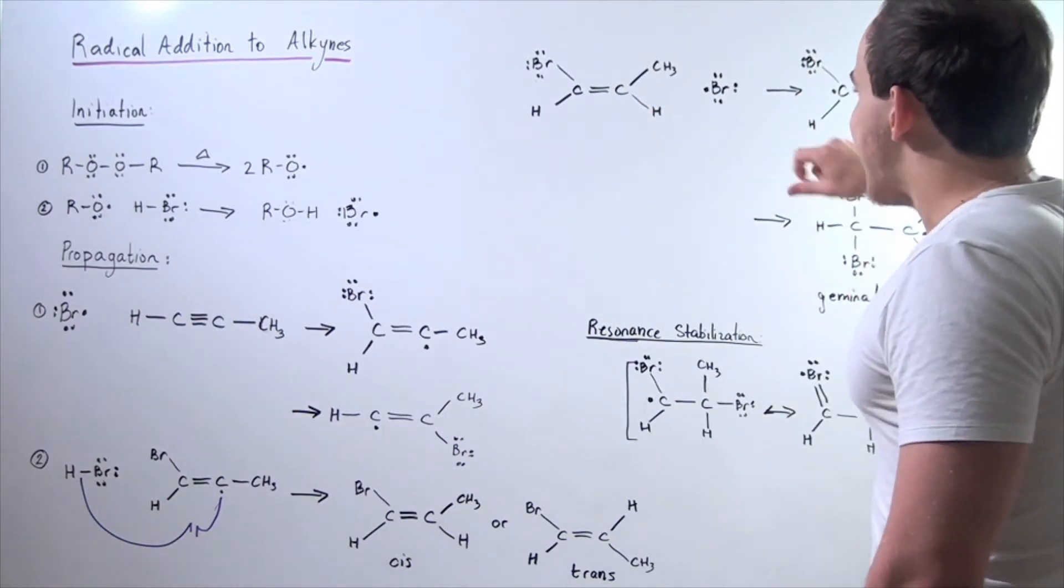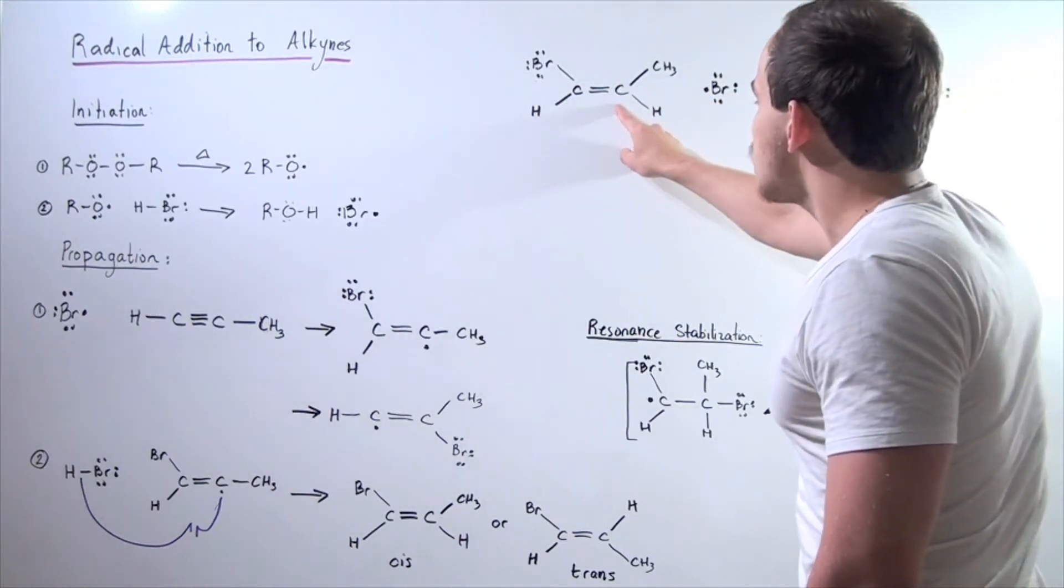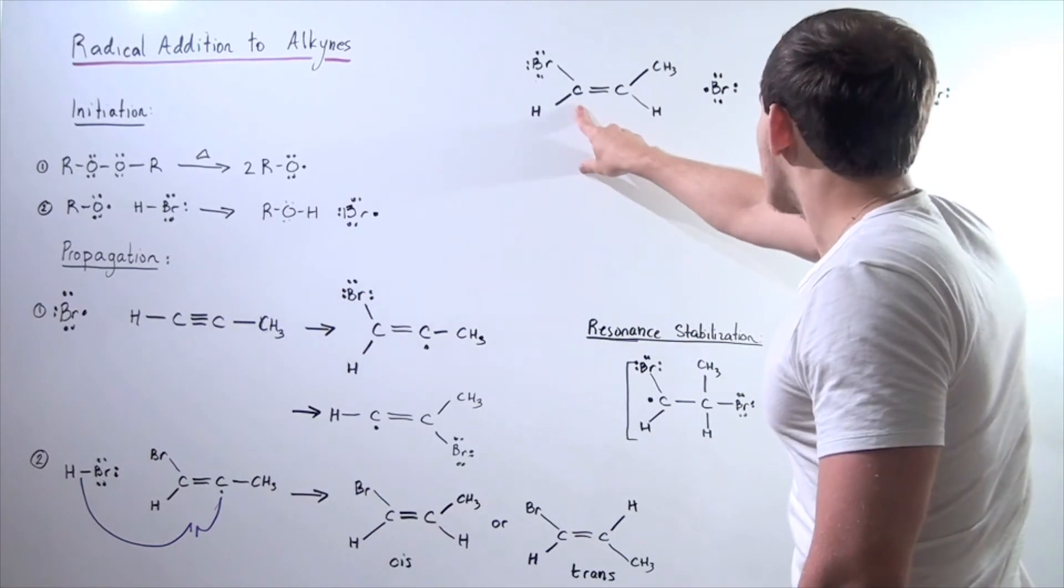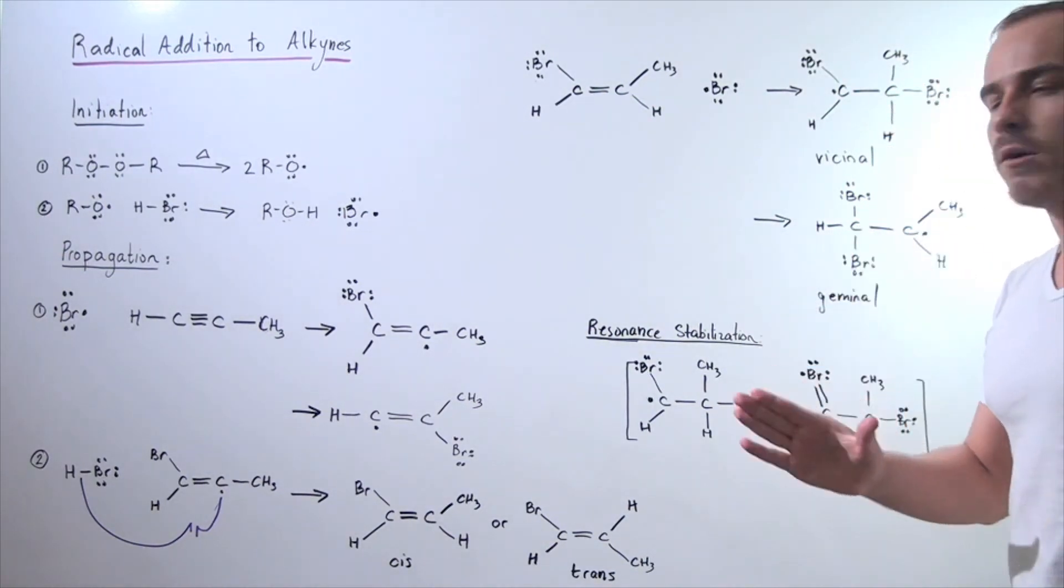So once again, this electron can either add onto this carbon or onto this carbon, forming either the vicinal or the geminal dihalide. Now, which one of these will be formed and why?